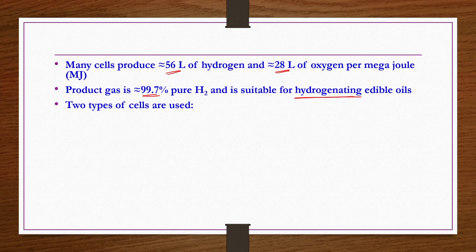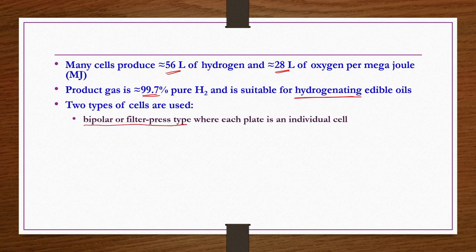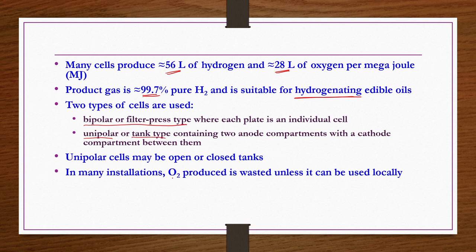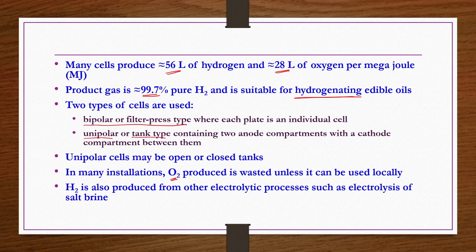Two important cell types are available: bipolar or filter press type cells, where each plate is an individual cell, and unipolar or tank type cells containing two anode compartments with a cathode compartment between them. Unipolar cells may be open or closed tanks. Oxygen produced is often wasted unless it can be used locally. H2 is also produced from electrolysis of salt brine solution.